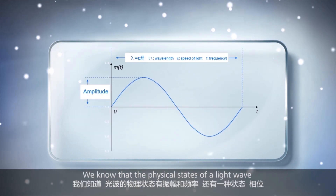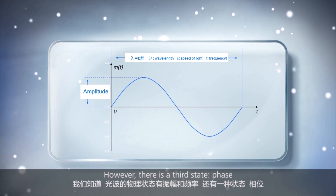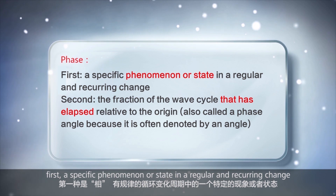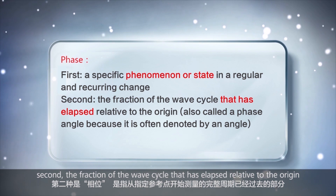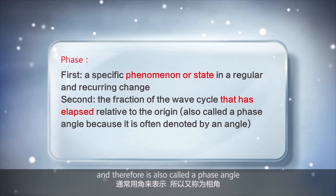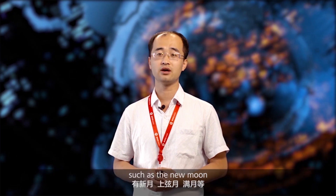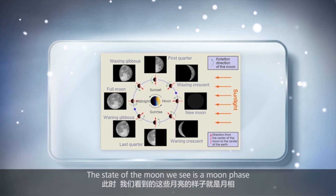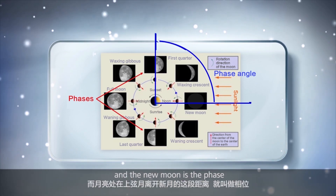We know that the physical states of a light wave include amplitude and frequency. However, there is a third state: phase. The word phase has two meanings in physics. First, a specific phenomenon or state in a regular and recurring change. Second, the fraction of the wave cycle that has elapsed relative to the origin, often denoted by an angle — also called a phase angle. For example, the moon has different phases at different times of a month, such as the new moon, the first quarter of the moon, and the full moon. The state of the moon we see is a moon phase, and the distance between the first quarter of the moon and the new moon is the phase.